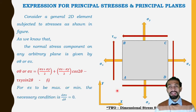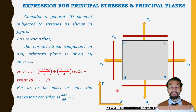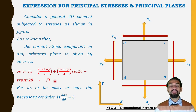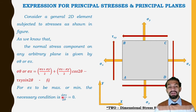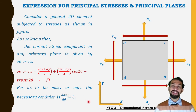For σx′ to be maximum or minimum, the necessary condition is that dσx/dθ equals zero — that is, we differentiate the stress expression with respect to θ and set it equal to zero.